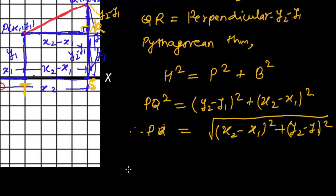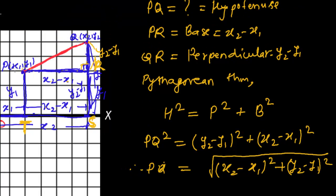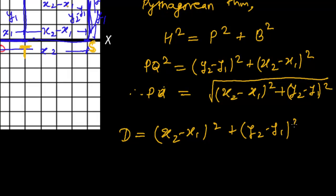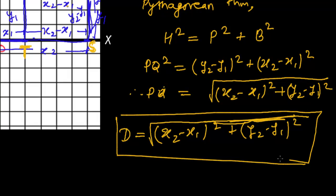This is the distance formula. For any given two points, the distance between them is: the square root of (X2 minus X1) whole square plus (Y2 minus Y1) whole square. This is the general formula to find out the distance between two points — you simply take the difference of the X coordinates and the difference of the Y coordinates, square them, add, and take the square root. In the next video, we'll be doing a couple of examples about finding the distance between two points. Bye-bye for now!